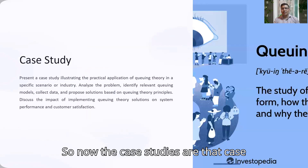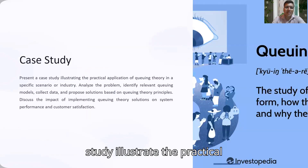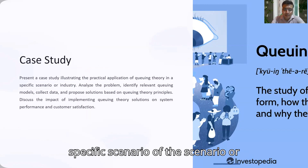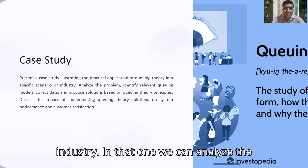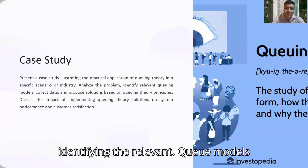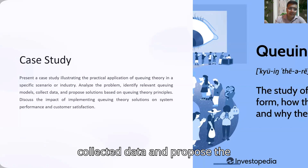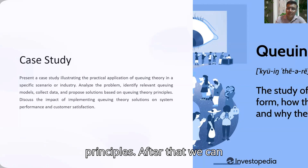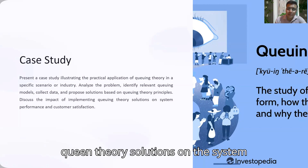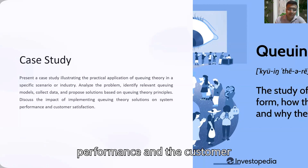Case studies illustrate the practical applications of queuing theory in specific scenarios or industries. We can analyze the problem by identifying the relevant queuing models, collecting data, and proposing solutions based on queuing theory principles. After that, we can discuss the impact of implementing queuing theory solutions on system performance and customer satisfaction.